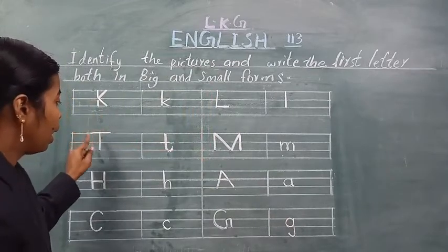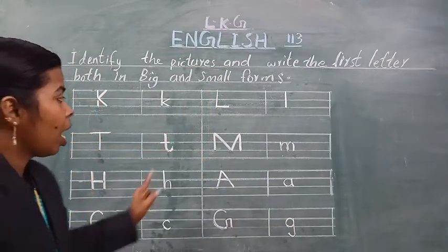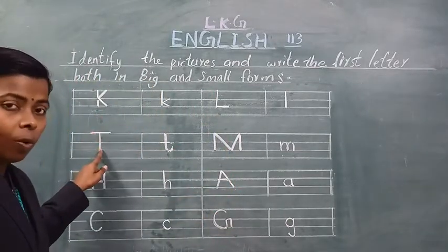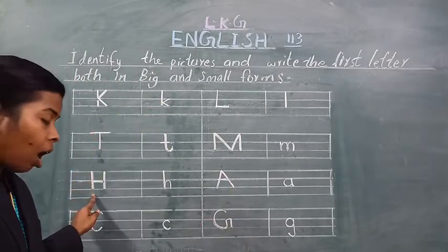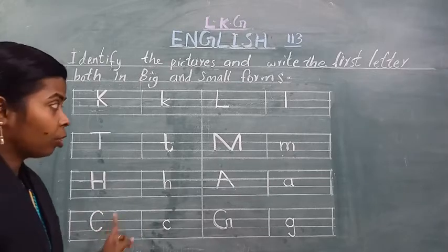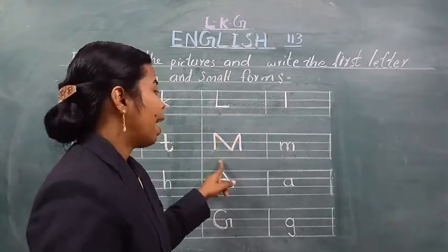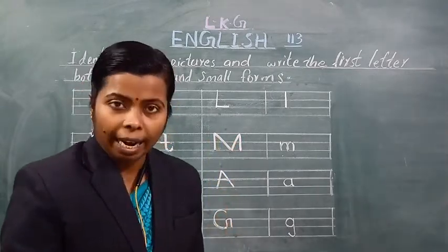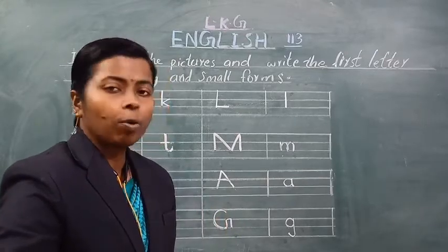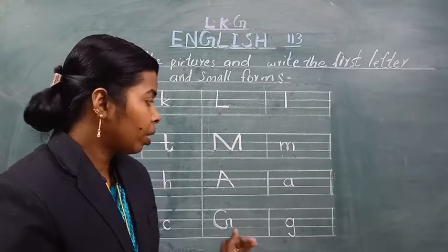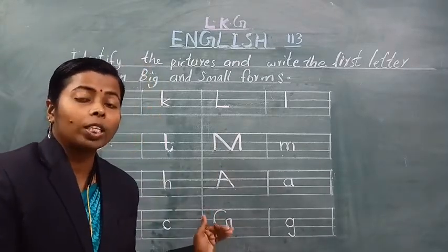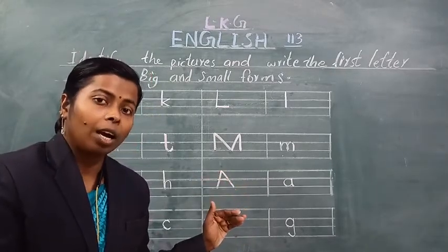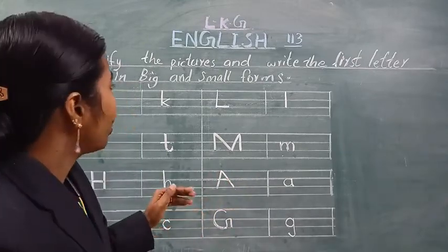Let's recap: K for kite, T for tree, H for hat, C for cat, L for lotus, M for mango, A for apple, G for grapes. Students, aapko four-line book mein karna hai. All-in-one book mein bhi hai. Achche se yaad karna — picture ka pahchanna aur picture ki spelling yaad karna. This is your today's homework.